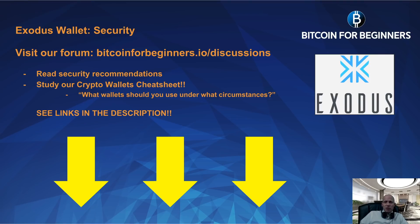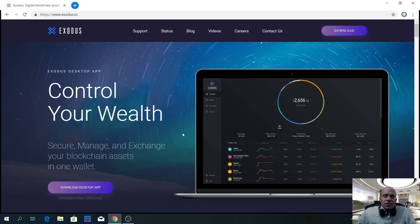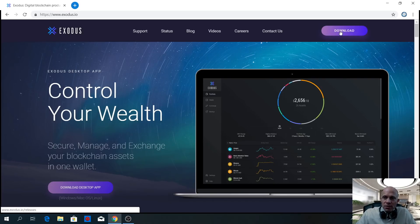Before you start installing the wallet software, please visit our forum at bitcoinforbeginners.io/discussions. We will provide links in the description where you can find resources about security as discussed in this video, and you will also find a crypto wallets cheat sheet. Now we will start to install the wallet — let's begin with the installation process. First, go to exodus.io and click the download button.